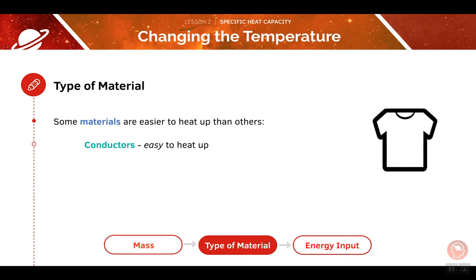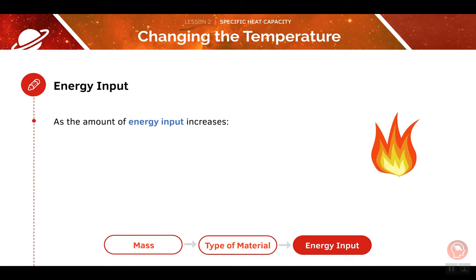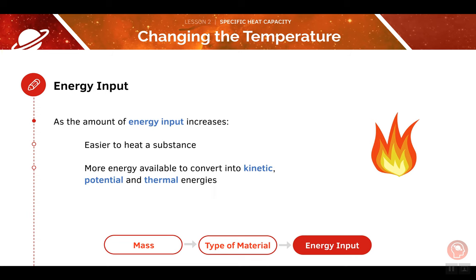For example, we can look at conductors and insulators. Conductors are fairly easy to heat up, whilst insulators are difficult to heat up. As the amount of energy input increases, it is easier to heat a substance, because we simply have more energy available in the system, which can be converted into kinetic, potential, and thermal energies.